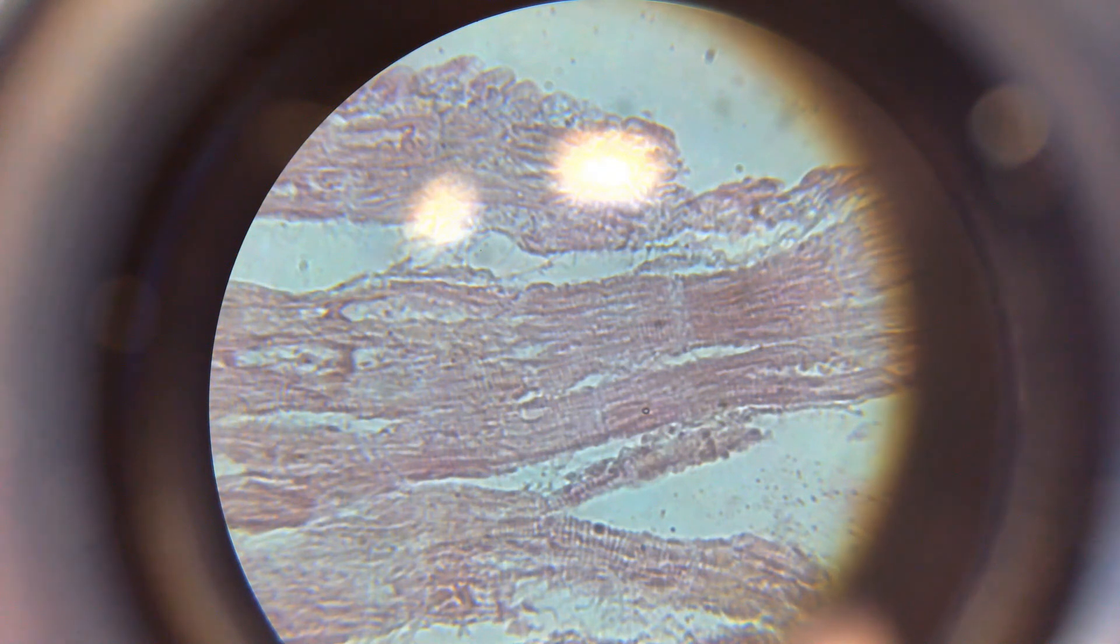One is cardiac, which we find in the heart. Skeletal muscle, which is voluntary, is what we use to move our body. And we have smooth muscle in the walls of hollow organs, like our blood vessels and digestive system.